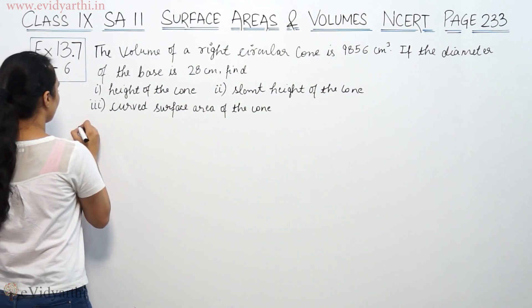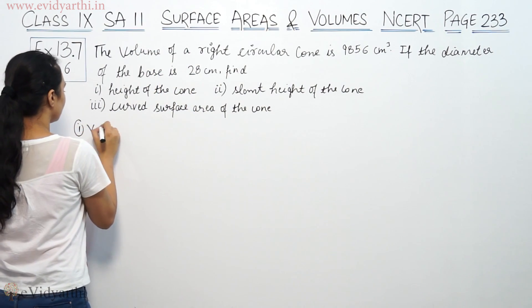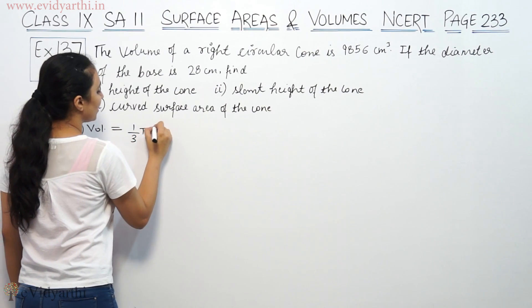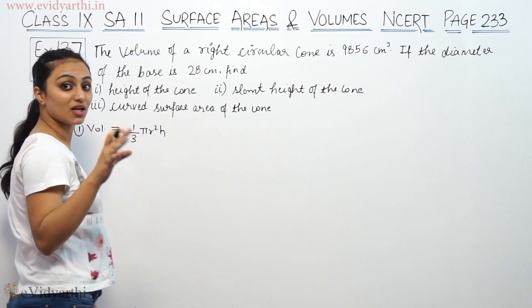First part, the volume formula: we have to use 1/3 πr²h. And we have to find the height of the cone.